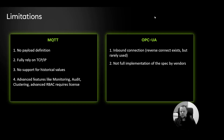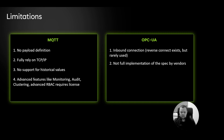To summarize MQTT's characteristics: no defined payload structure (which keeps it flexible), full reliance on TCP/IP, no support for historical values, and advanced features like monitoring, auditing, and clustering requiring commercial licenses. If you don't need payload definition control, are fine with TCP, can address historical values another way, and those four limitations don't concern you — then MQTT is a good fit.